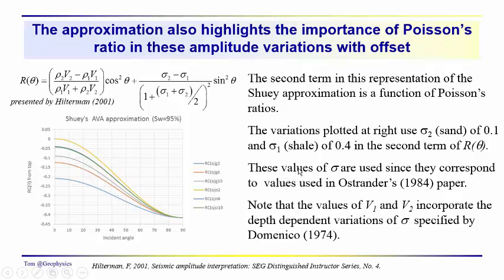We want to compare these values of sigma, the values that are used up here, 0.1 and 0.4. We're going to take a look at Ostrander's paper and show how they compare. The values of V1 and V2 incorporate the depth-dependent variations of sigma that we talked about before.